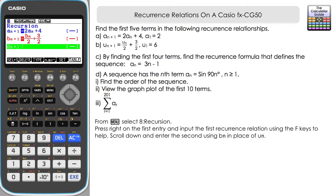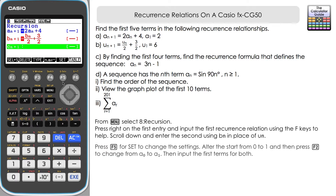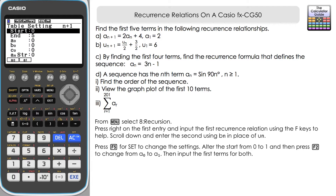Before we find the first five terms we need to go to Set to configure some details for our recurrence relationships. Press F5. The first thing to change is the start — it currently starts at 0 but we want a start of 1, working out terms 1 to 5. So change the start to 1.